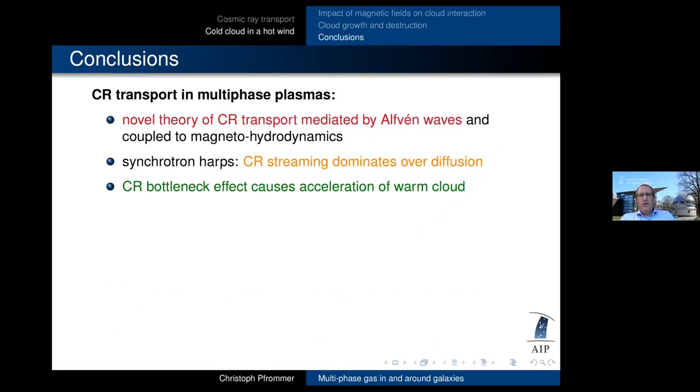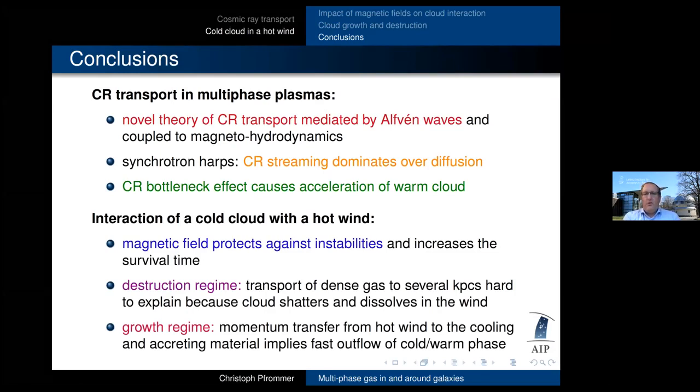Now, let me conclude my talk. I've shown to you that cosmic ray transport is important in multiphase plasmas. We've been able to come up with a normal theory of cosmic ray transport mediated by Alfven waves that is coupled to MHD. I've shown to you that by looking at synchrotron harps that streaming of cosmic rays dominates over diffusion. And finally, a cosmic ray bottleneck effect can cause the acceleration of a warm cloud. I've also shown to you that the interaction of a cold cloud with a hot wind magnetic fields are important, but they don't change the game here. However, what changes the game is this growth regime, which transfers momentum from a hot wind to the cooling and accreting material, implying a fast outflow of the cold and warm phase. If you have a small cloud here, it's hard to imagine how you can fund for this several kiloparsecs, because it will eventually shatter and dissolve in the wind. Thank you very much.